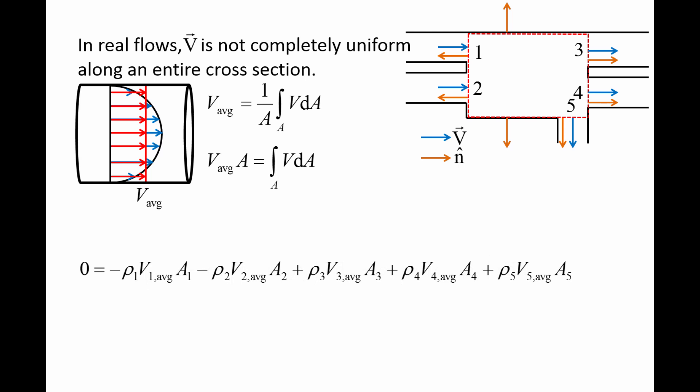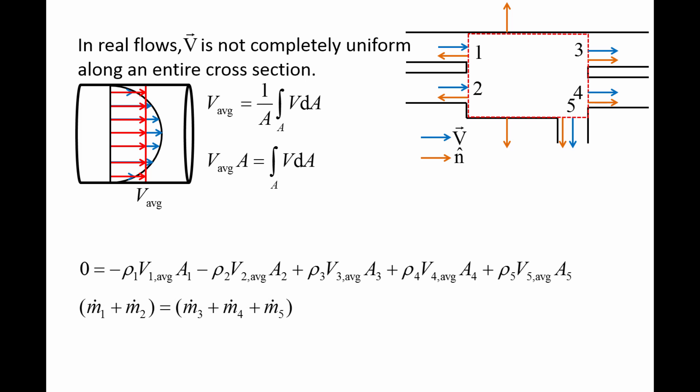The five integrals have now been simplified to density rho times the average speed v-average times the area A at each inlet and outlet. Each term has dimensions of mass per time, so the terms represent mass flux rates and will be written as m-dot. The equation becomes: 0 equals negative m-dot-1 minus m-dot-2 plus m-dot-3 plus m-dot-4 plus m-dot-5. Notice that all terms associated with an inlet are negative, while all terms associated with an outlet are positive. Moving the inlet terms to the left side, we can write this more compactly: the sum of the mass flux rates through the inlets equals the sum of the mass flux rates through the outlets, where the subscript j indicates the inlet or outlet number.